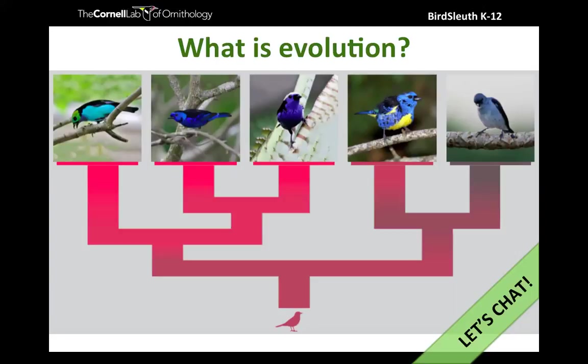Maria says evolution is change in the diversity of species over long periods of time. I love the inclusion of that period of time. We're also seeing: gradual changes and adaptations, adapting to surroundings over time, survival strategies, changing over time, diversified adaptations over time. You guys are hitting on what I think is one of the really key components of these definitions — that change over time.